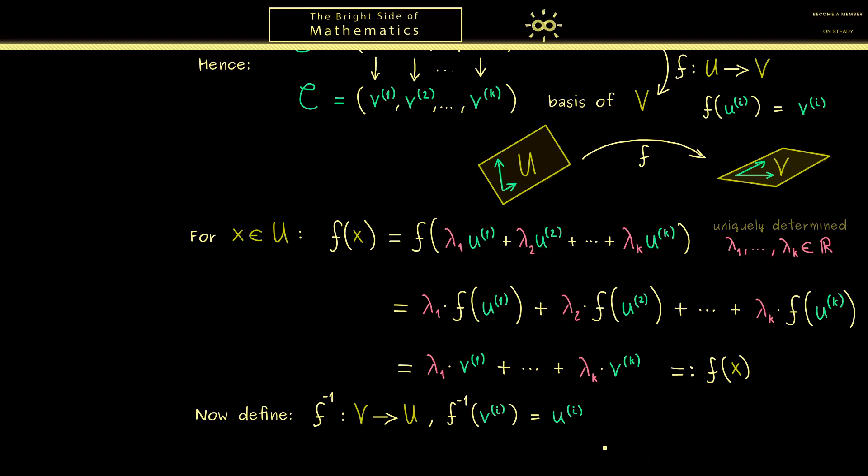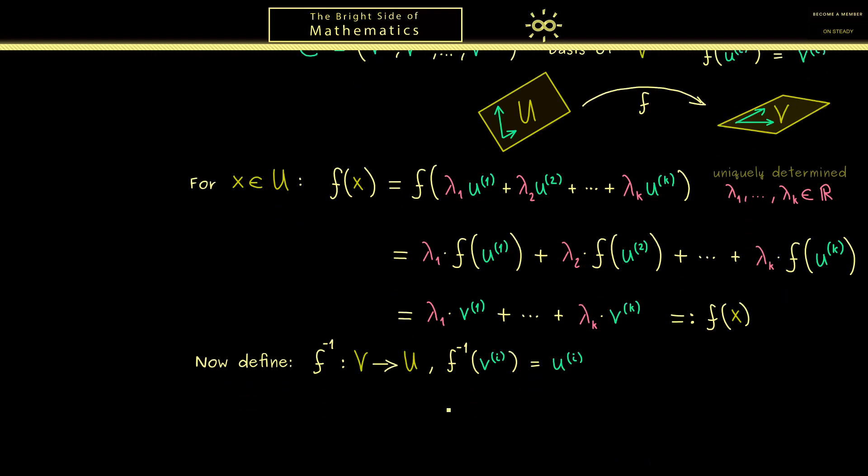Indeed this is not hard to check, just calculate the two compositions. This means F inverse composed with F then putting in an element X gives us X. Moreover the other way around as well, so F after F inverse of an element Y gives us back Y. Ok and then you see with this the proof is finished because F is linear by construction and also bijective.